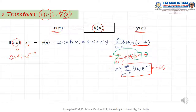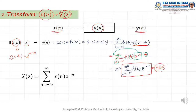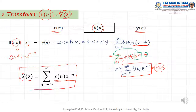Generally, instead of H, we use X. So the Z-transform is defined as: X of Z equals summation of X of N times Z to the power of minus N. This is the Z-transform formula.